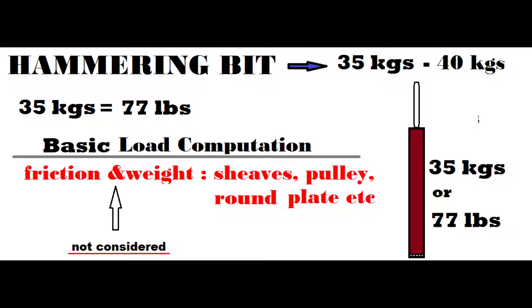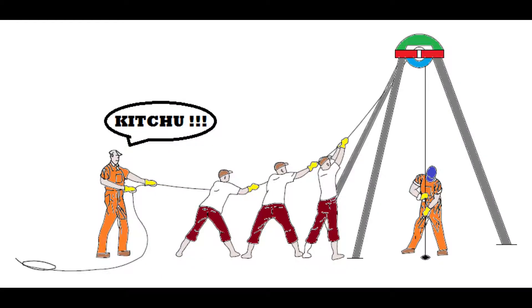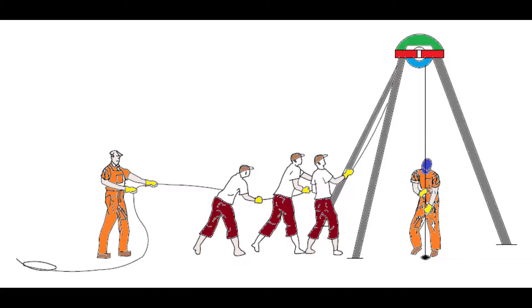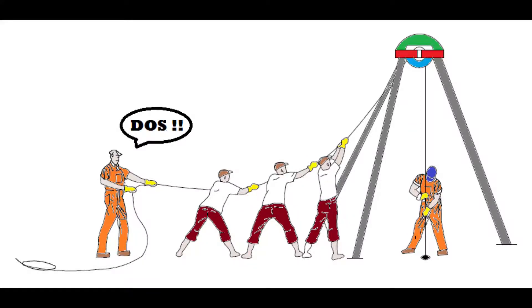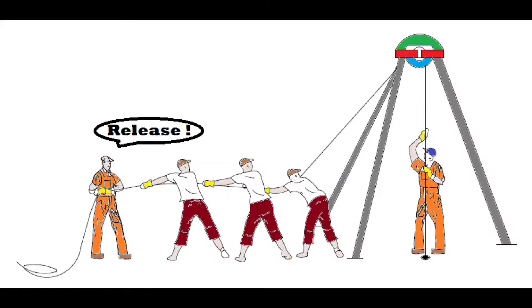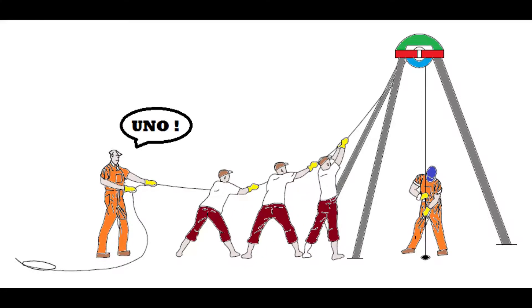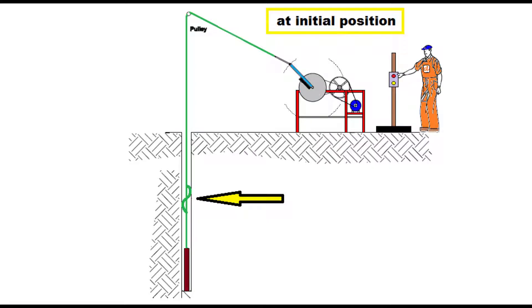Our goal first is to lift the hammering bit that weighs 35 kg, which is equivalent to 77 pounds, where it can mimic the process of the manual drillers. They're just pulling the bit up and releasing it. Of course they must wait first for the hammering bit to settle down before they will pull it up again, and the process will continue again and again.